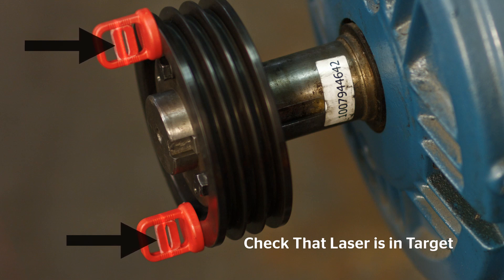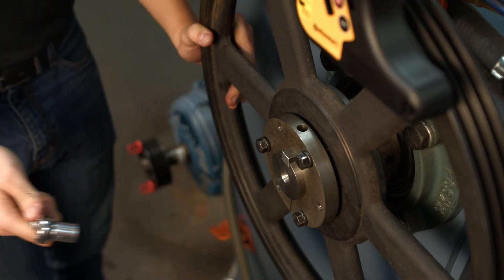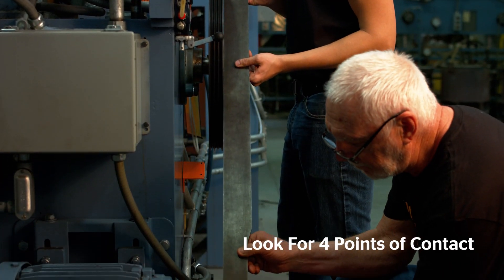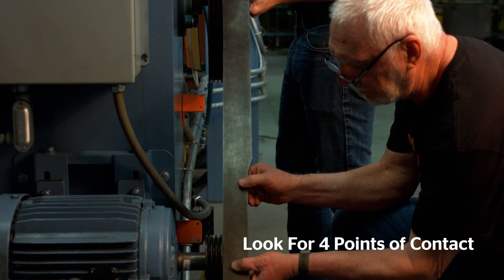Belt alignment should be checked whenever you install or replace belts. When checking for alignment, look for both angular and parallel alignment. If using a straight edge, look for four points of contact.